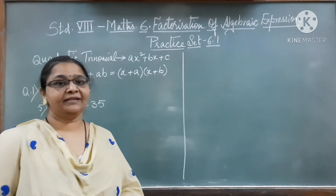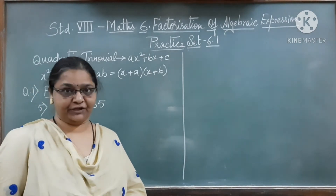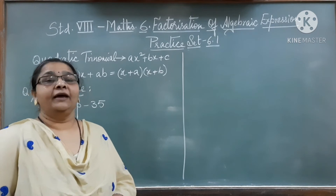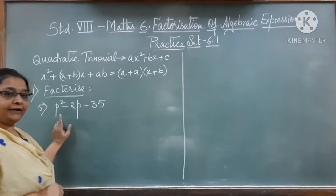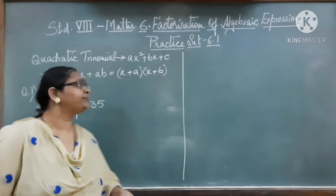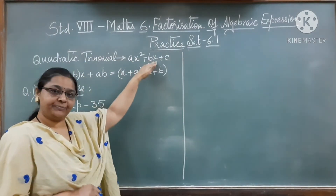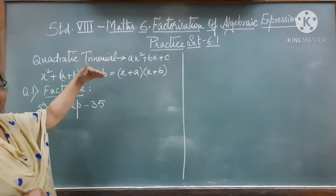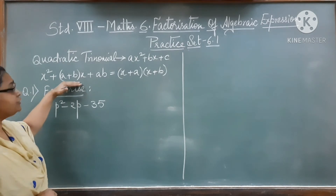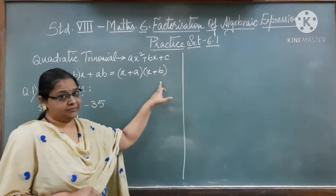Hello students, let us continue with Standard A Maths Chapter 6, Factorization of Algebraic Expressions, Practice Set 6.1. We know we are factorizing quadratic trinomials of the form AX² + BX + C, and we are going to write that trinomial in the form (X + A + B) into X, plus AB, to find out the factors of the form (X + A) and (X + B).